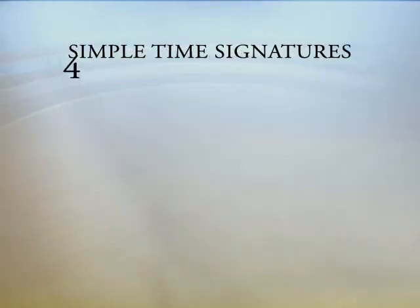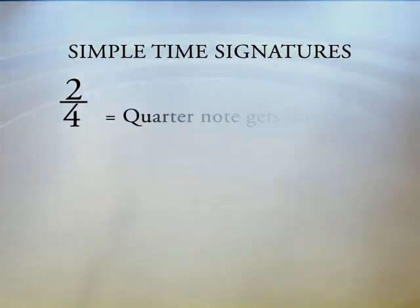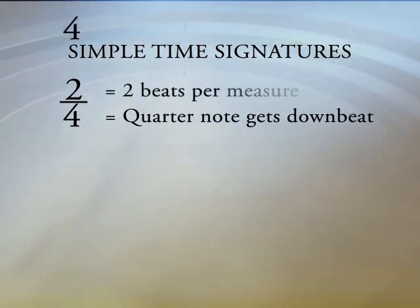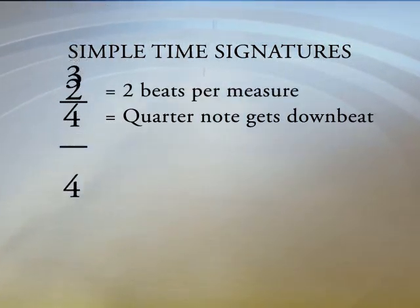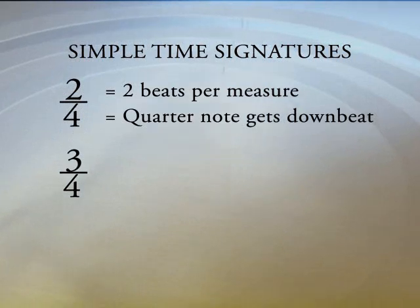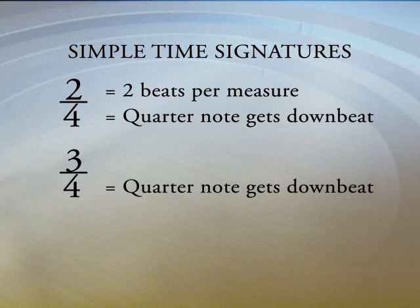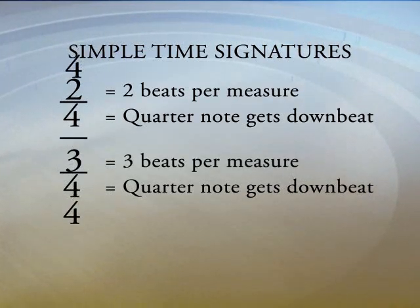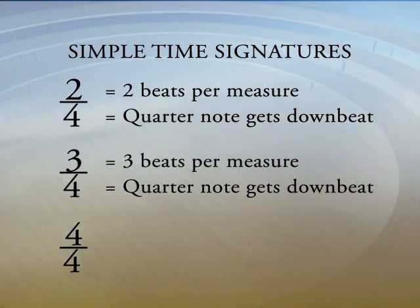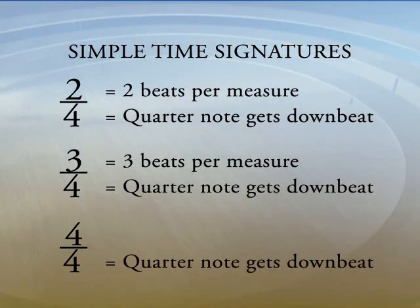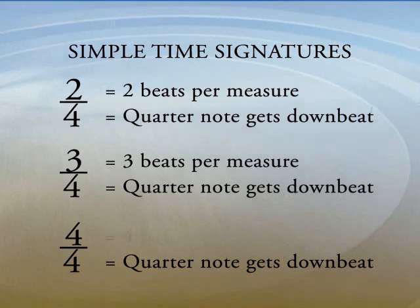Now we will cover simple time signatures. With the 2-4 time signature the quarter note represented by the bottom four gets the downbeat with two beats per measure. With the 3-4 time signature the quarter note represented by the bottom four gets the downbeat with three beats per measure. With the 4-4 time signature the quarter note represented by the bottom four again gets the downbeat with four beats per measure.